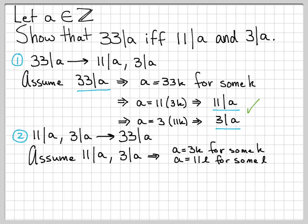The first one, a equals 3k, comes from the 3 divides a. And the second statement, a equals 11L, comes from 11 divides L. That's what it means to be divisible by 3 and divisible by 11, respectively.